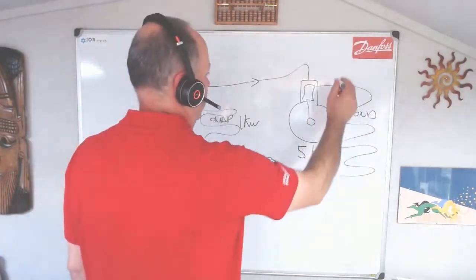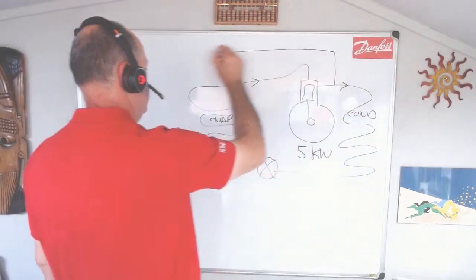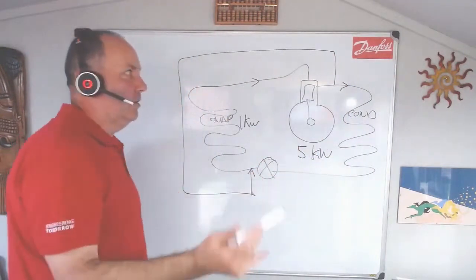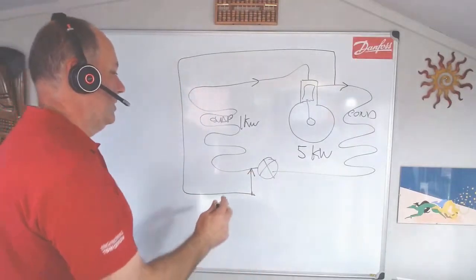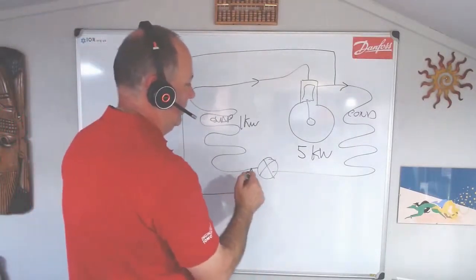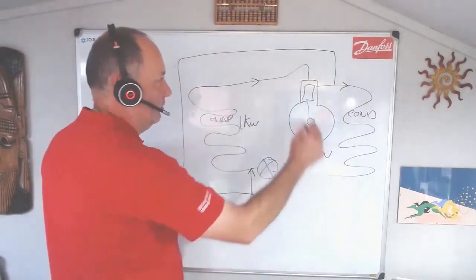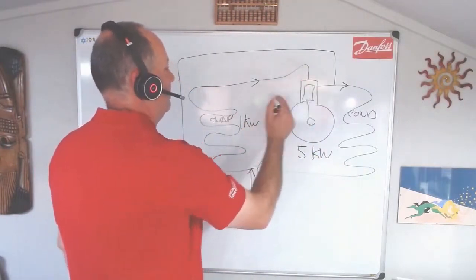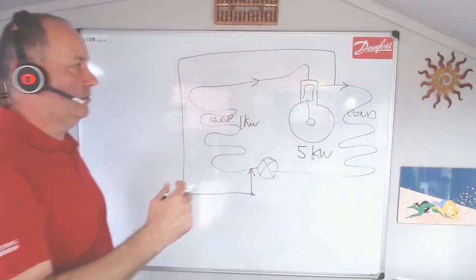We could do a hot gas bypass and take a bit of the discharge gas and dump it into the evaporator here, a bit like a hot gas defrost. But we've got to be careful because the system is still running, and we've got to be careful of the temperature coming back to our machine because we need to keep an eye on the superheat.